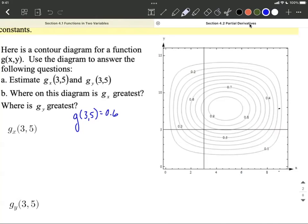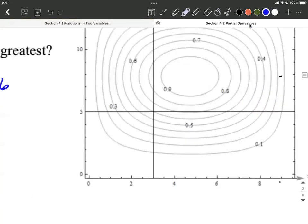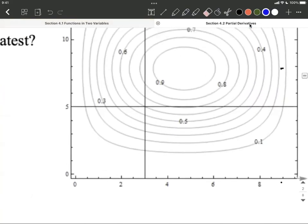Next, in order to find these partial derivatives, when we have the one with respect to x, that means our x values can change. They can move to the right or to the left, but our y values are going to stay consistent. So the first thing I'm going to do is go ahead and go over to the next contour line, this circle going around here. And we want to estimate about where that's at.